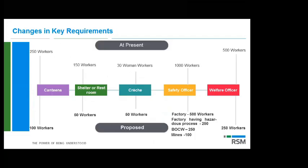Key changes to facility thresholds: canteen — currently 250 or more people, now reduced to 100; shelter or rest rooms — earlier 150 workers, now 50 or more; crèche — earlier 30 workers, now 50 (threshold increased for crèche only). Safety officer — earlier 1,000 workers, now 500 for normal factories, 250 for factories with hazardous processes, 250 for building and construction workers, 100 for mines. Welfare officer — earlier 500, now 250. So except for crèche, all thresholds have gone down, meaning more organizations must provide these facilities.